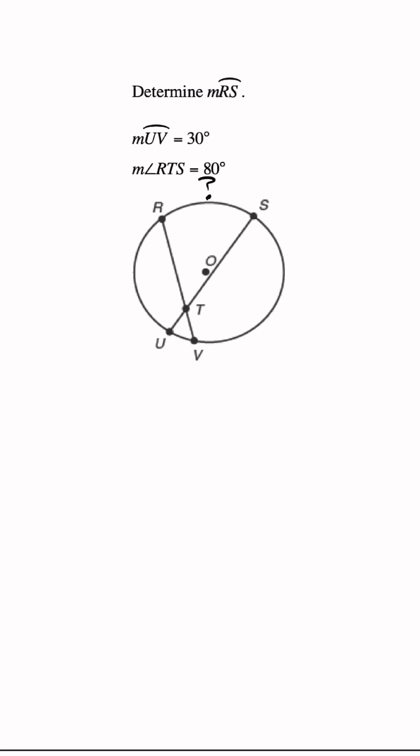They tell us that the measure of arc UV is 30 degrees and the measure of angle RTS is 80 degrees. So whenever we're given a scenario like this, we know that this angle, the 80 degrees, has to be equal to exactly one half of the measure of arc RS plus the measure of arc UV.